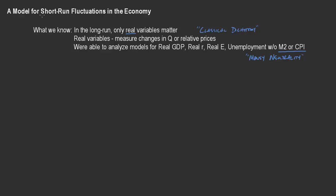Now what we want to do is think about short-run fluctuations in the economy. What are the things that actually move us from the current trajectory? Why do we have recessions? Why do we have excess growth in some years? Why are there some years where we have really high unemployment versus other years where we have really low unemployment? Why do we deviate from our normal trends? When we talk about short-run, we're typically talking about one to three years, maybe five years — the relatively short-run when it comes to the full economy.